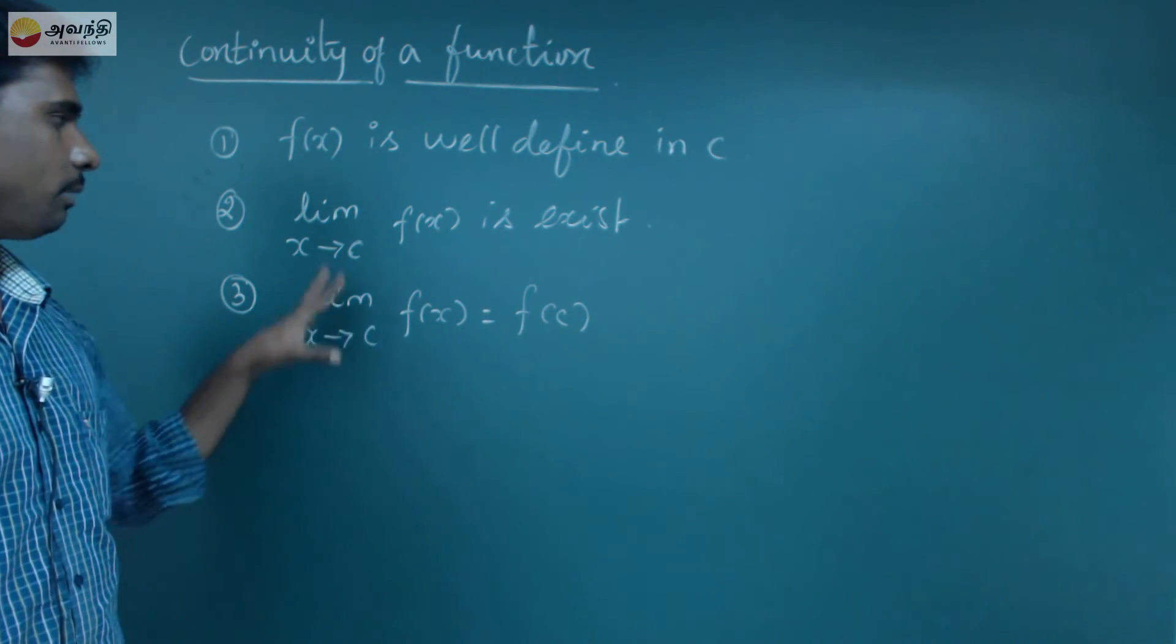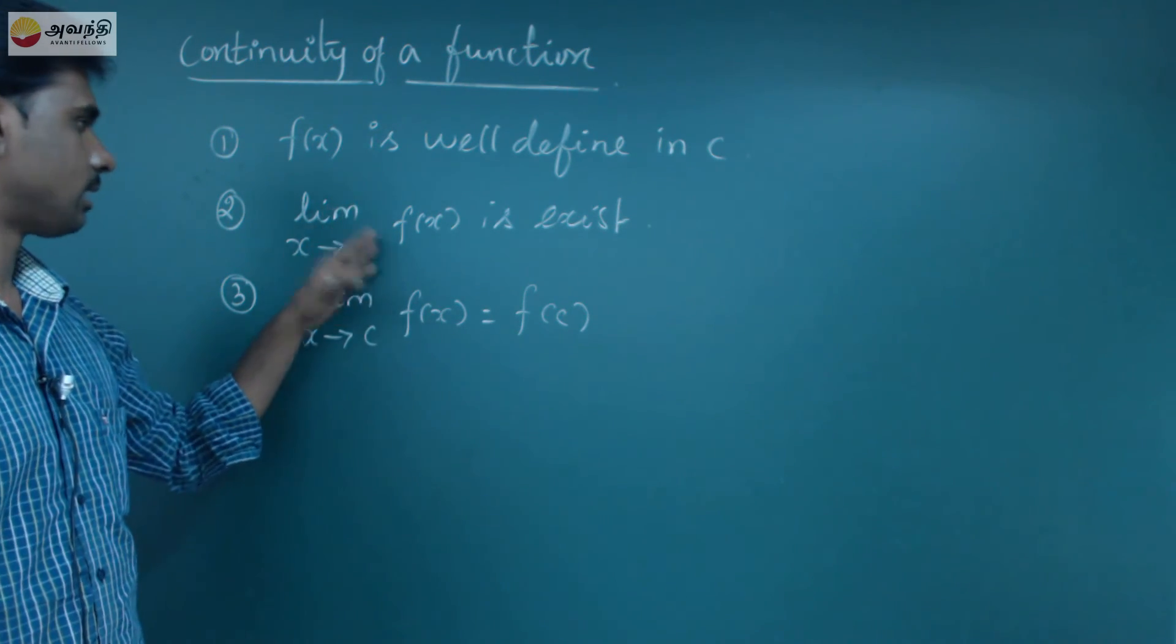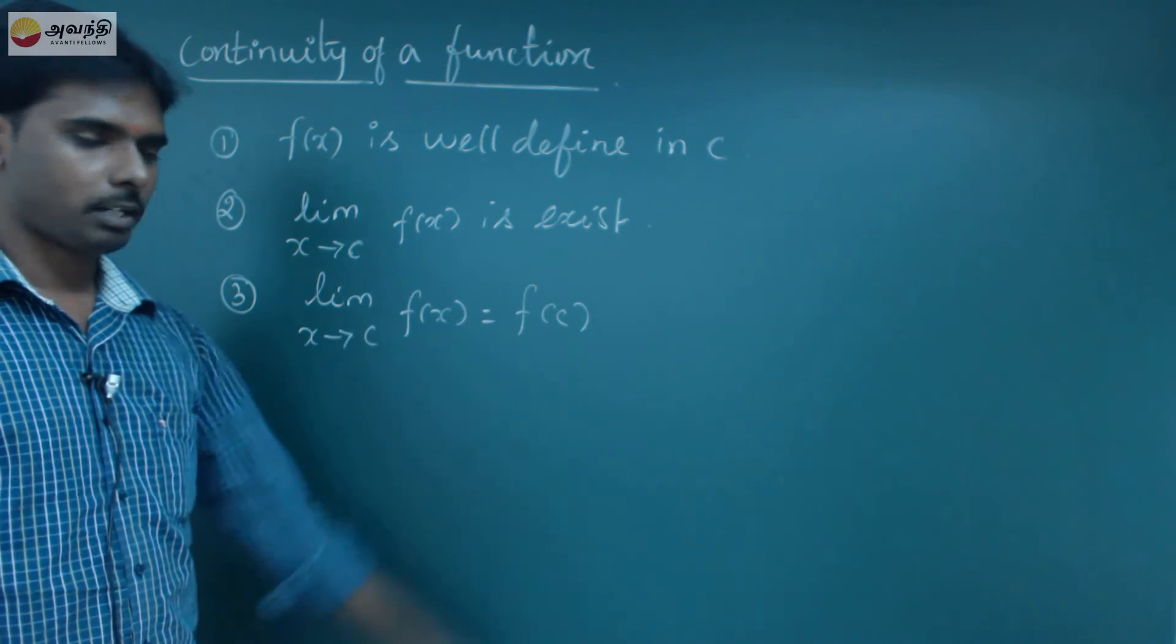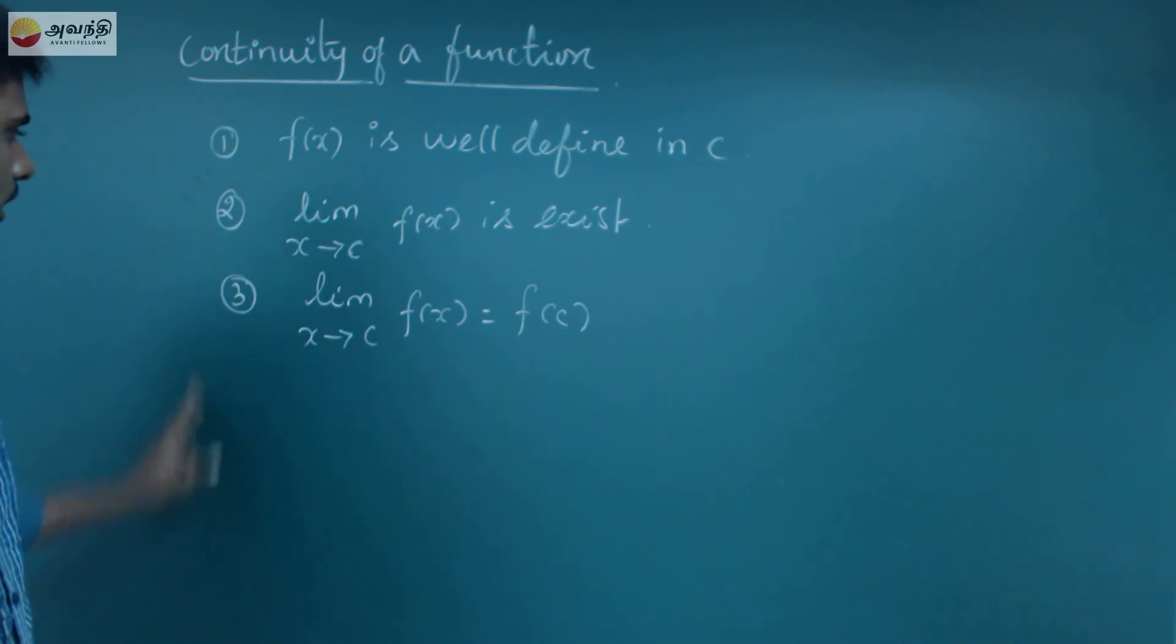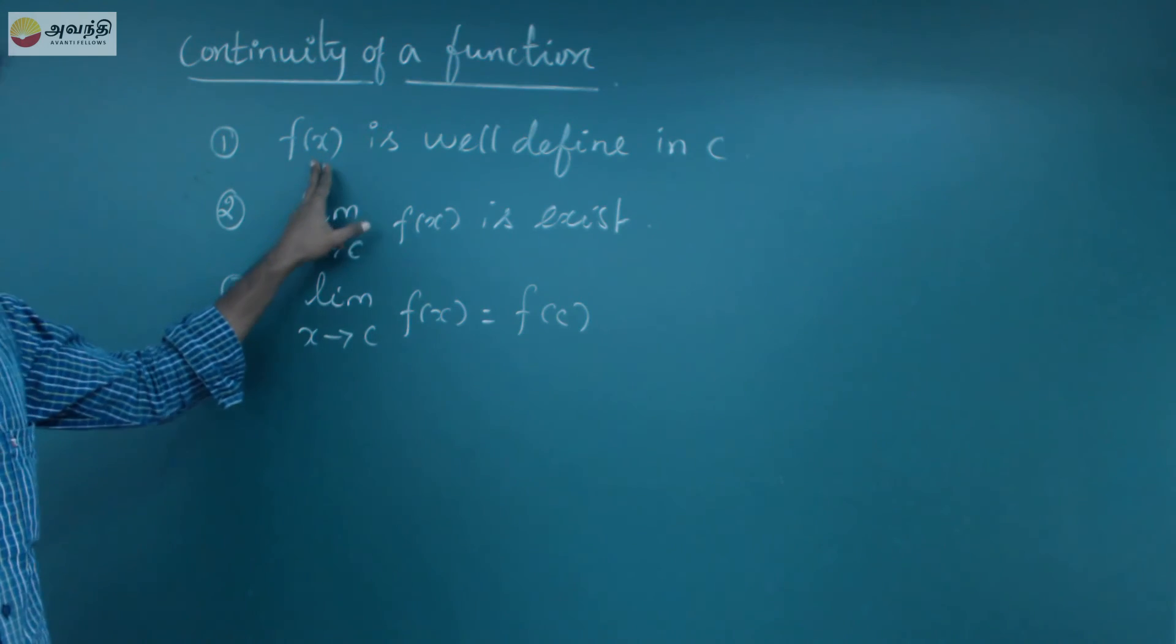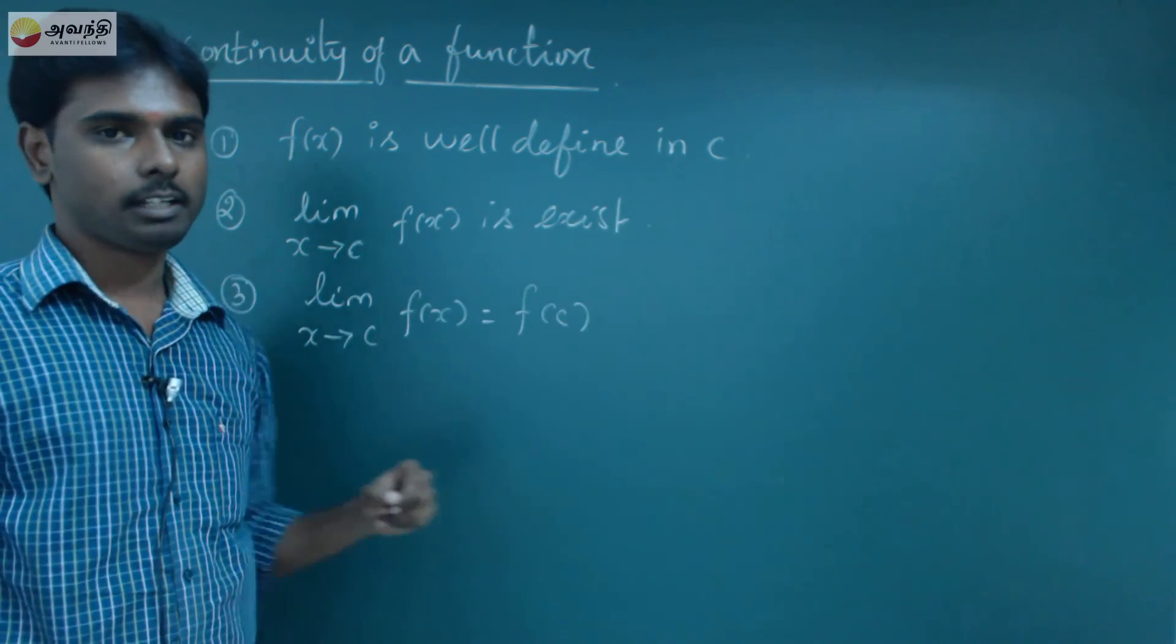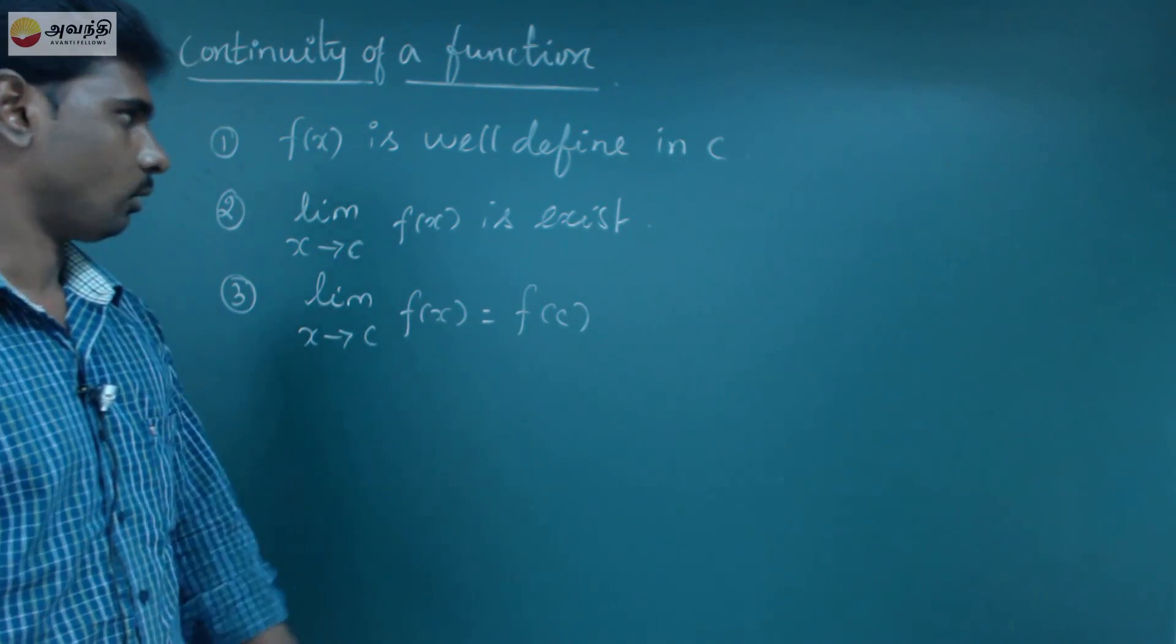That's why left-hand limit and right-hand limit exists, second one. Third one, that point, substitute that point, equal. So three conditions: if a function satisfies these, and the function has one value in c, it is continuous. We can't change that.